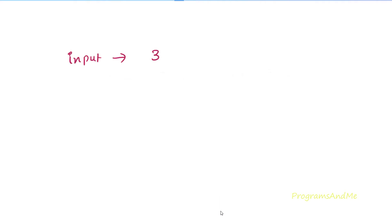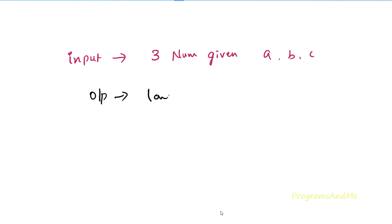So the input of this program is three numbers. If I take a, b, c — we will take three inputs and we need to find out the largest number among them. The output is nothing but the largest number.